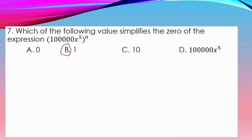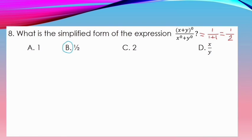For number 7: The result is 1. No need to solve it — as you can see, everything is inside parentheses, meaning they form one expression, so the answer is 1. For number 8: What is the simplified form of x plus y to the power of 0, over x to the power of 0 plus y to the power of 0? Our numerator is 1, and our denominator is 1 plus 1. So we have 1 over 2, which is letter B.